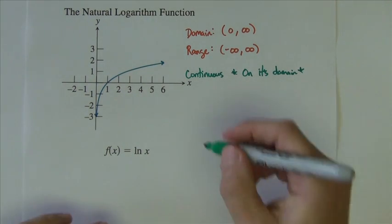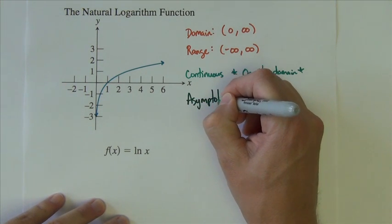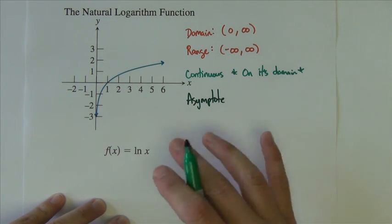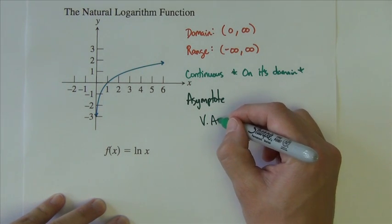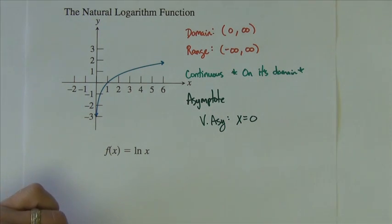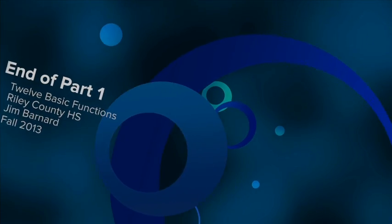It has asymptote. And just like the exponential function and the domain and range, this has been flip-flopped. Whereas the exponential one had a horizontal asymptote, this has a vertical asymptote at x equals 0. Of course, that can change if the graph moves. And just like the